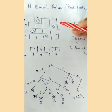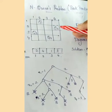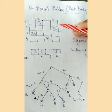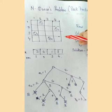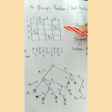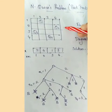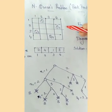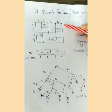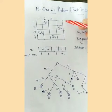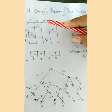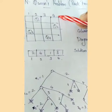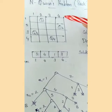For the 4-Queens problem, we use a 4x4 matrix. The symbol represents a 4x4 matrix chessboard layout.